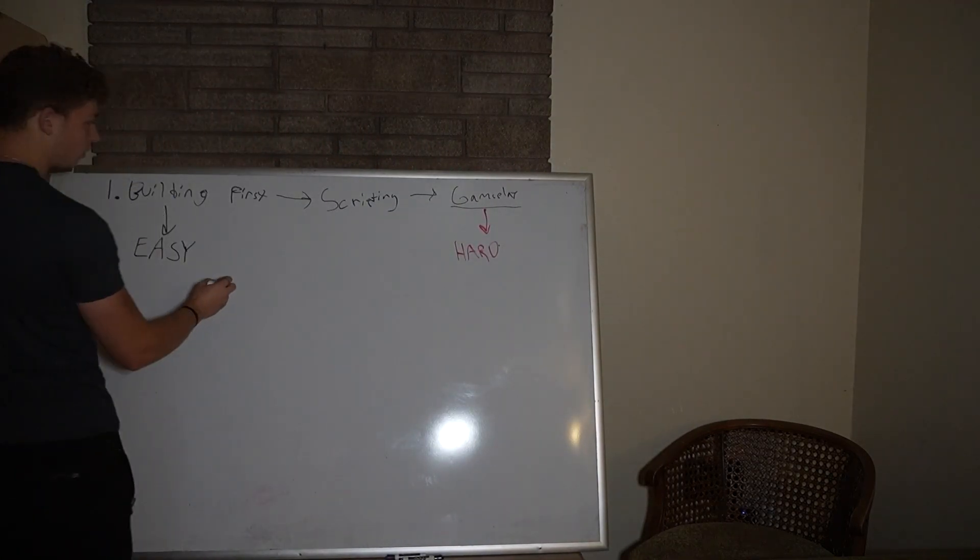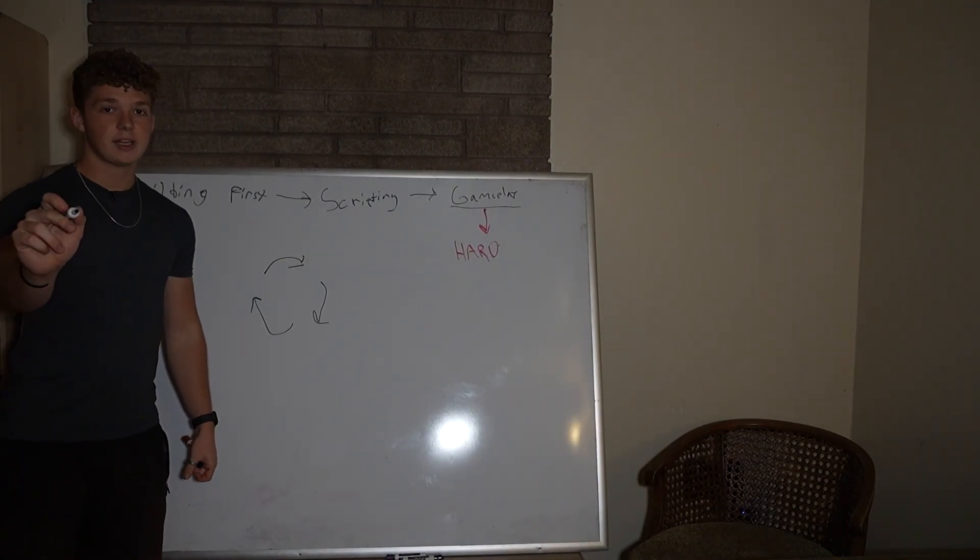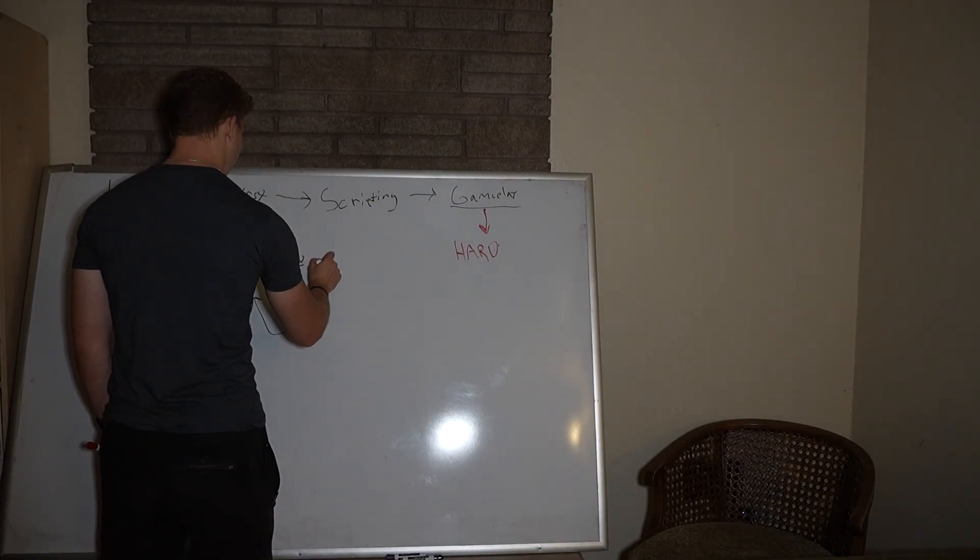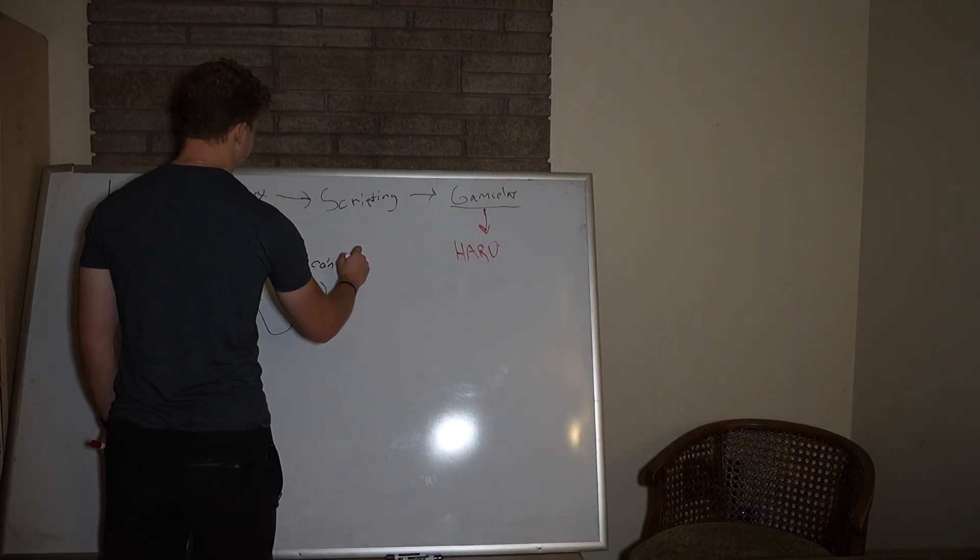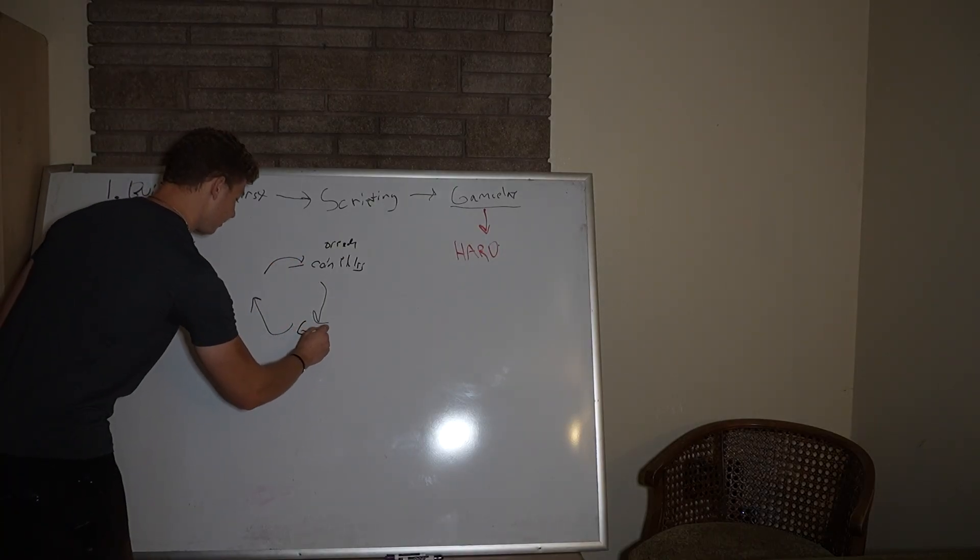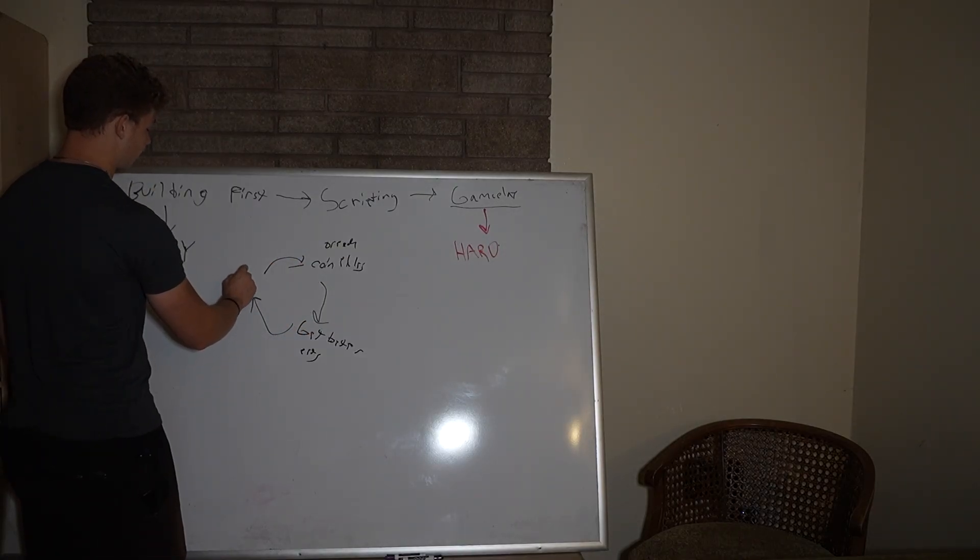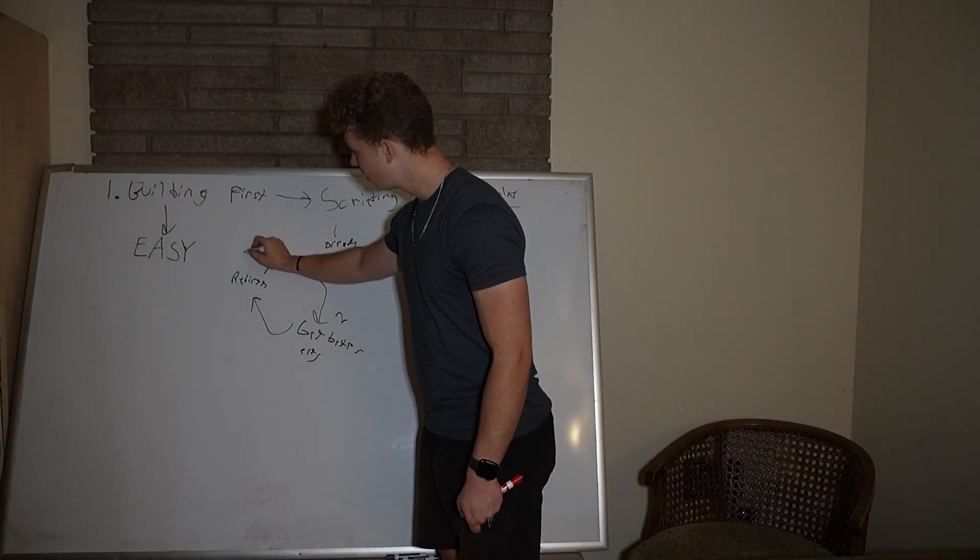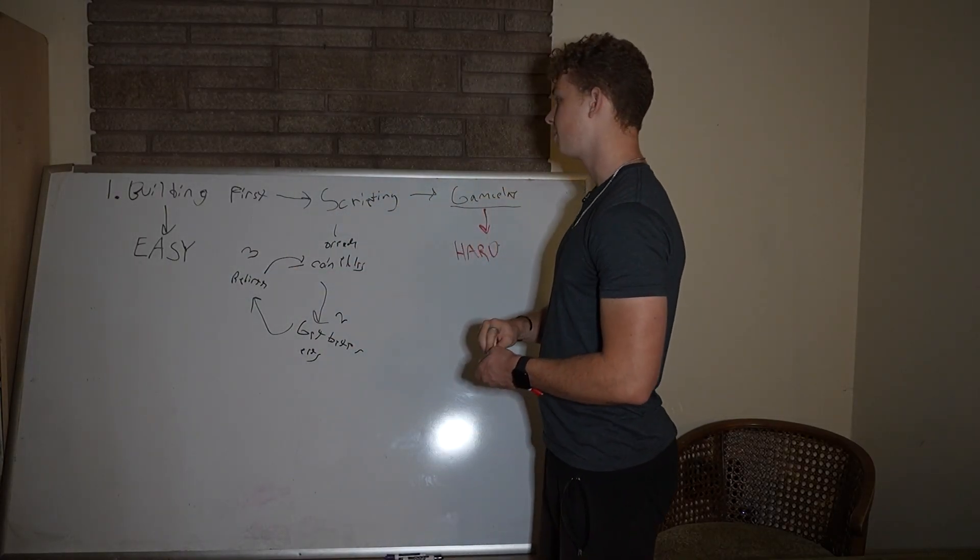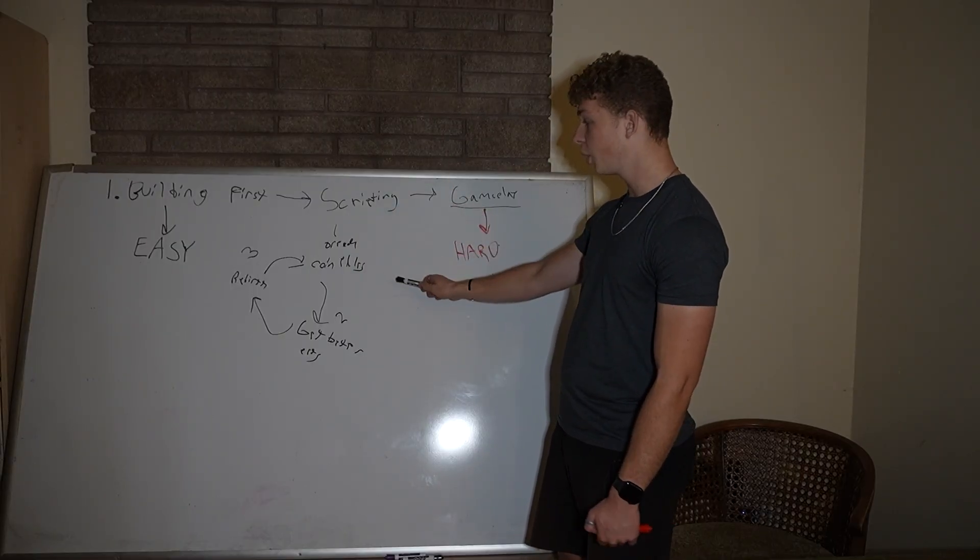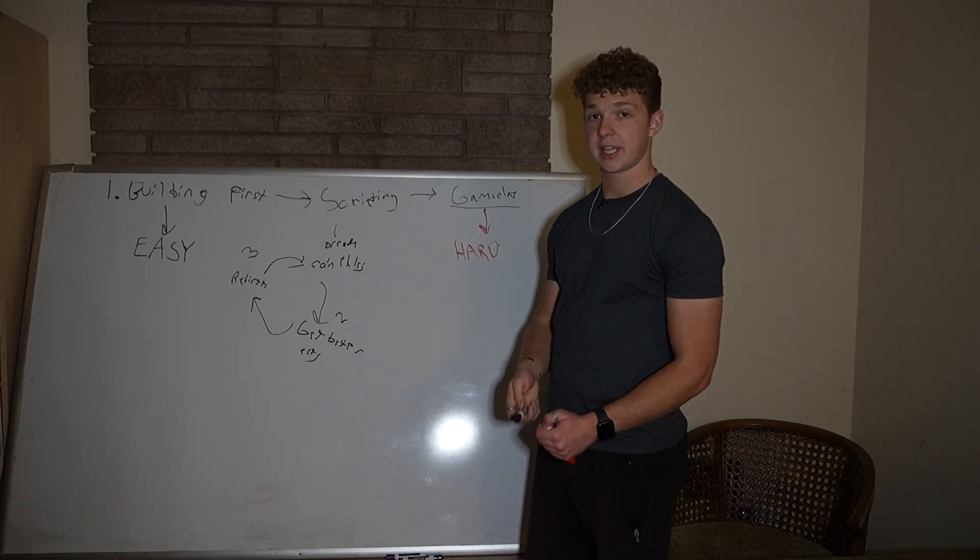So you want to focus on your core loop. Let's say you're making a simulator. So a simulator, you might have coin piles on the ground, like Pet Simulator. Break coin piles, get better pets, and then rebirth. This is your primary, secondary, tertiary core loop. You want to get these three systems in place before you get anything else in place.